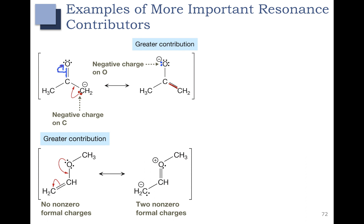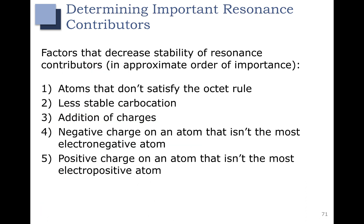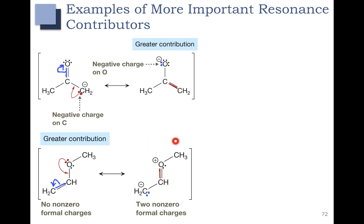Here's another example. We move red electrons down to form a double bond, and blue electrons came over. What happened here is we have a molecule and we added charges — so that's no good. Applying rule three: in our two resonance structures, we added charges to the structure on the right, so the first structure is the greater contributor.